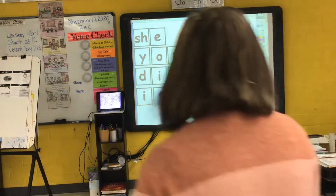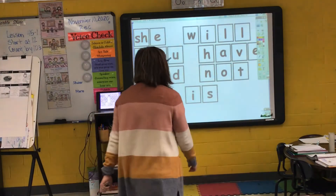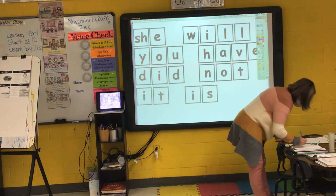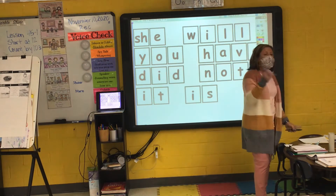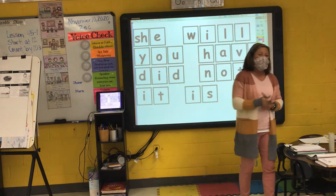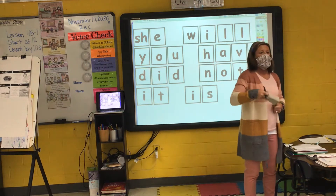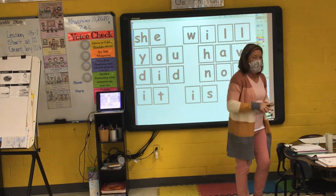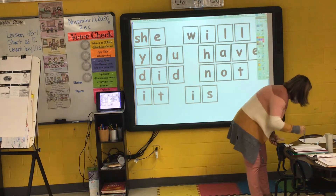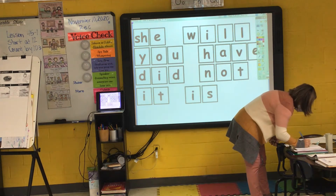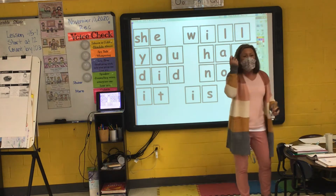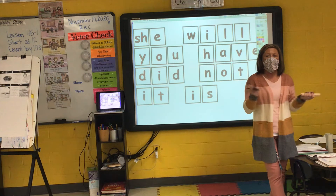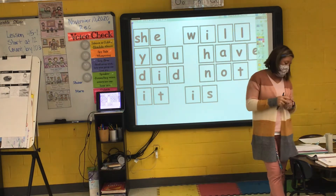A contraction is a shortened form of two words. When I write a contraction, I am replacing a letter or letters with an apostrophe. So a contraction is a way to write two words in a shortened form.